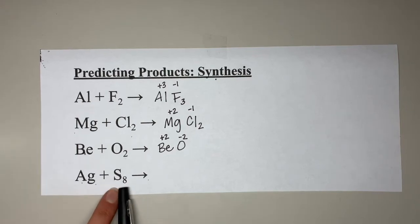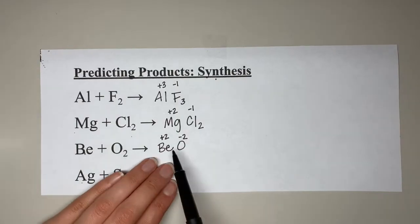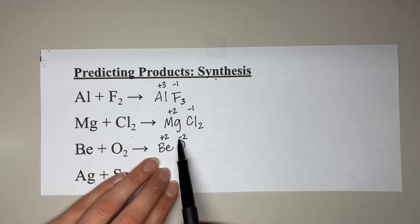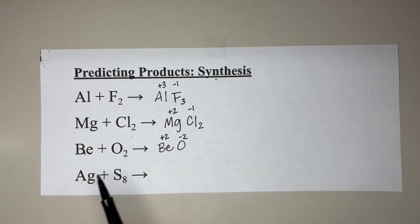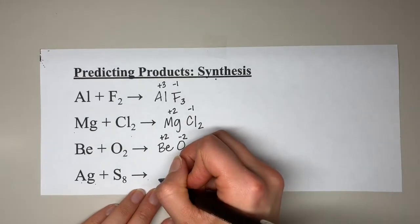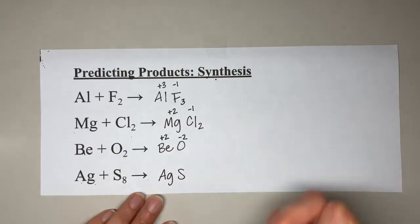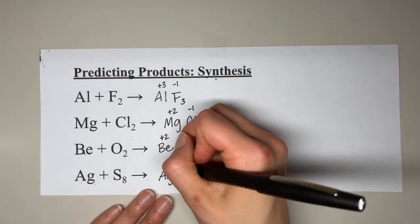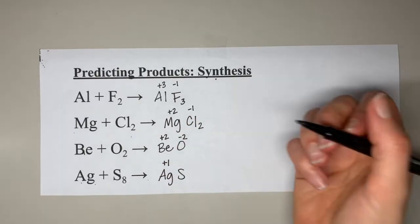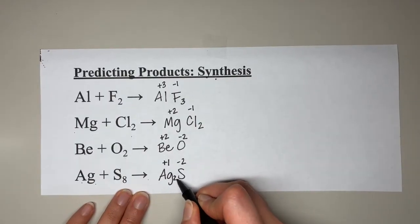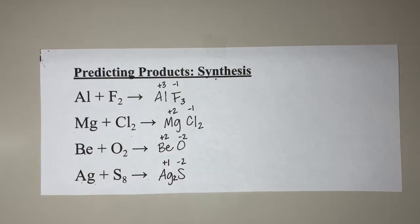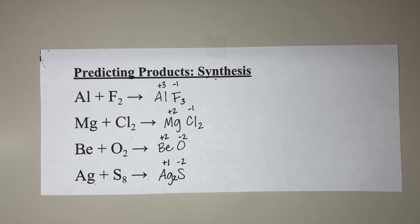For beryllium and oxygen: +2 and −2 are equal and opposite, so they cancel out, leaving us with BeO. Now for silver reacting with sulfur: our product is a compound consisting of silver and sulfur. Silver is a +1 charge and sulfur (Group 16) is a −2 charge. When we crisscross, the two above the sulfur comes down by the silver, and the one above the silver comes down by the sulfur (but we don't write that), giving us Ag2S. And that is it for synthesis reactions.